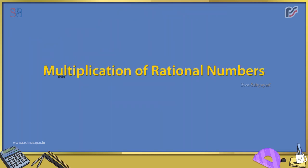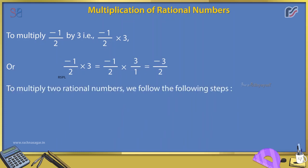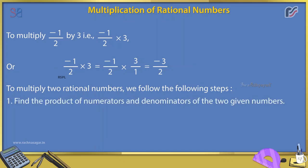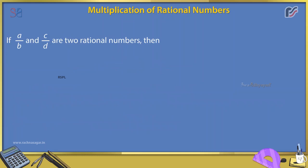Multiplication of Rational Numbers: To multiply -1/2 by 3, that is -1/2 × 3 = -1/2 × 3/1 = -3/2. To multiply two rational numbers, find the product of the numerators and the product of the denominators. If a/b and c/d are two rational numbers, then a/b × c/d = (a × c)/(b × d).